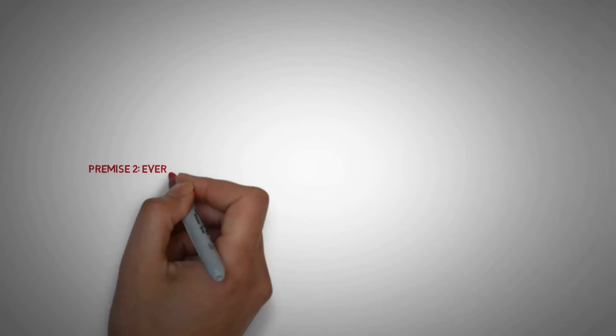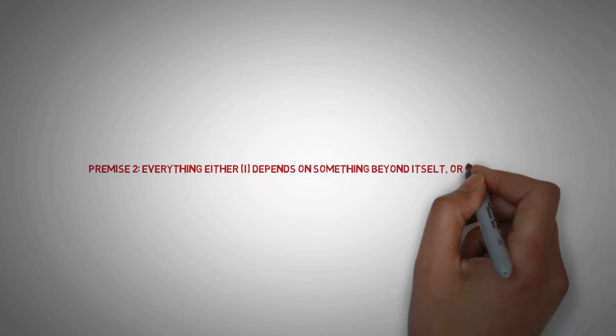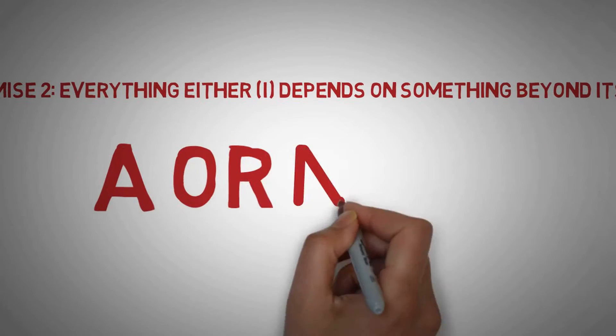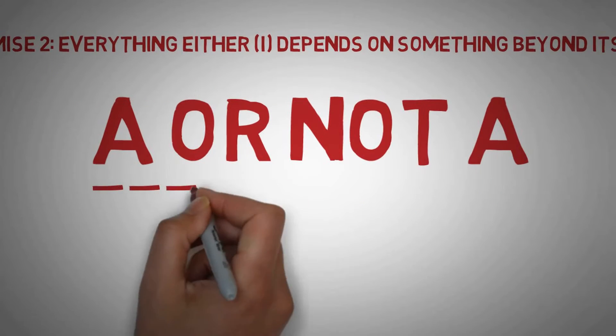Well, let's move on to premise 2. Everything either depends on something beyond itself, or doesn't depend on anything beyond itself. This principle is just an instance of the basic logical principle that A or not A. Either a thing is dependent or not. This principle is a basic truth of reason. You can know it to be true just by thinking.